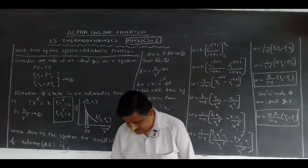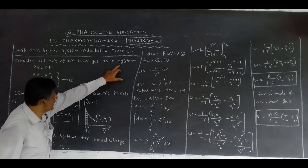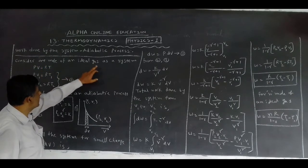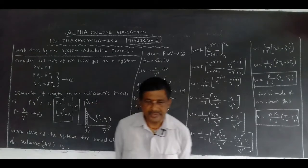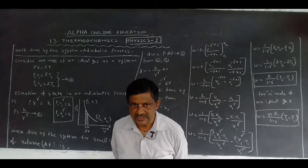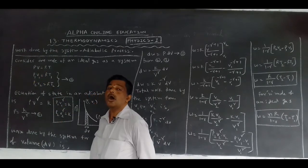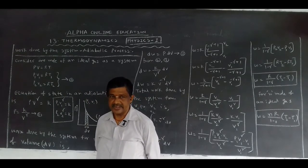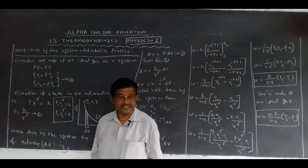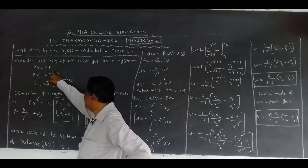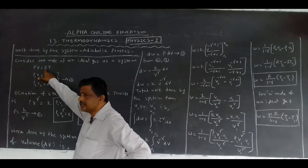Work done by the system in adiabatic process — for the mathematical expression, we consider one mole of an ideal gas as a system. To derive the work done by the system in an adiabatic process, we take the ideal gas as a system. We know the equation for the ideal gas: PV = RT. In the adiabatic process, pressure, volume, and temperature all change. That is why we write P1V1 = RT1 and P2V2 = RT2, where R is the universal gas constant.